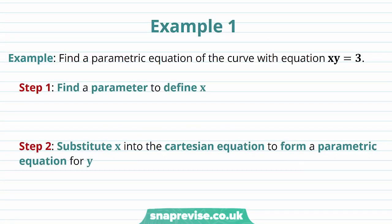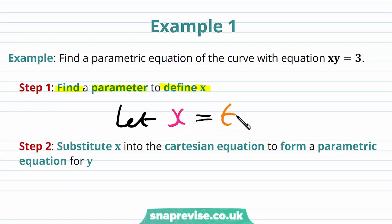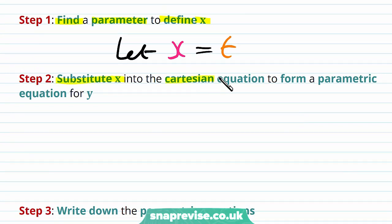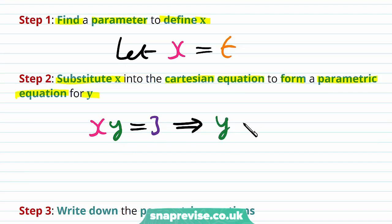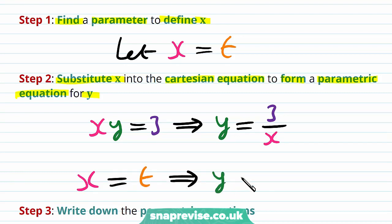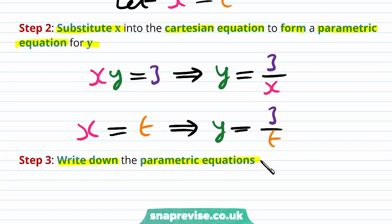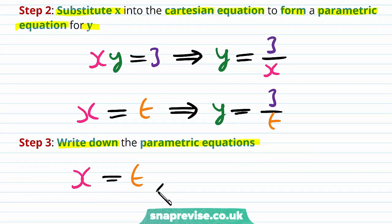Let's take a look at some examples. Our first example asks us to find a parametric equation of the curve with equation xy equals 3. We let x equal t as our parameter, then rearrange xy equals 3 to get y equals 3 over x, and substituting gives y equals 3 over t. Therefore the parametric equations are x is equal to t and y is equal to 3 over t.